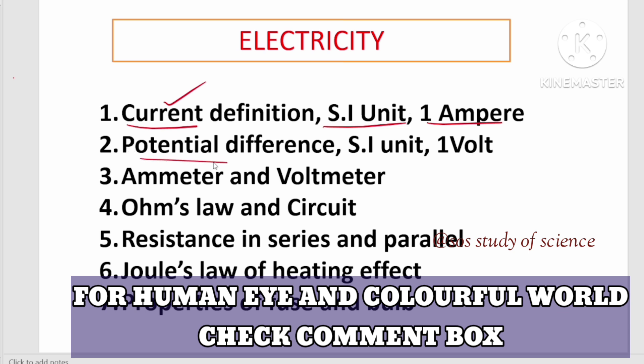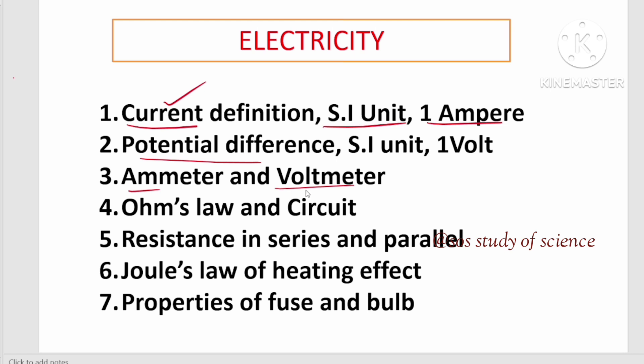Next one, potential difference. What is its SI unit and one volt. Next, ammeter and voltmeter. Ammeter is a device which is used to measure the current. Voltmeter is a device which is used to measure the voltage.